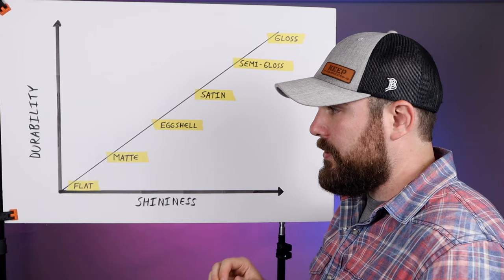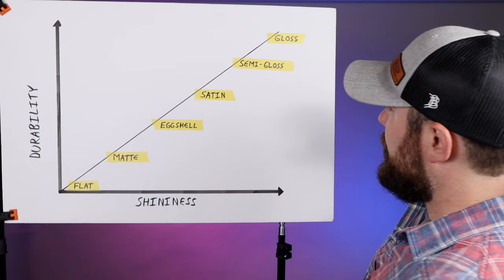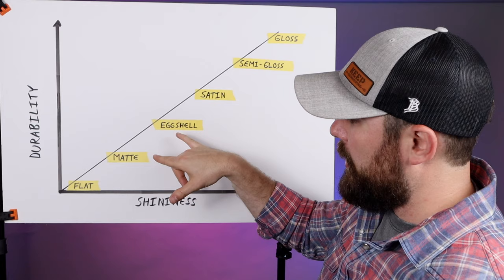Okay, just a quick review: semi-gloss goes on trim and doors, it's a battle between matte and eggshell on the walls for interior, and then flat almost always goes on the ceiling unless it's a bathroom with a water element. Good deal, alright, I think I nailed it!